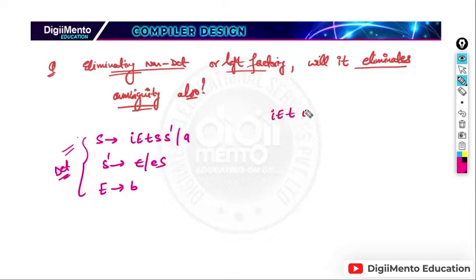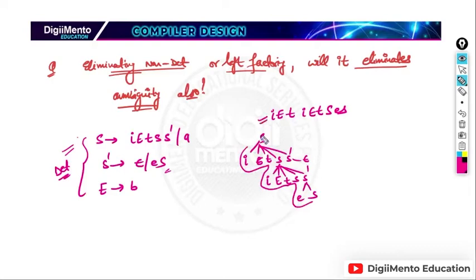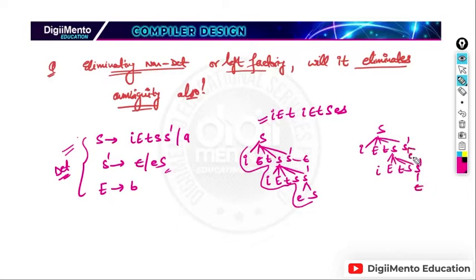Take the same string: i e t i e t s e s. Now let's try to generate this using the grammar. We can derive this string in more than one way — for example using epsilon in different positions — and we find there is more than one parse tree. So this grammar is also ambiguous.